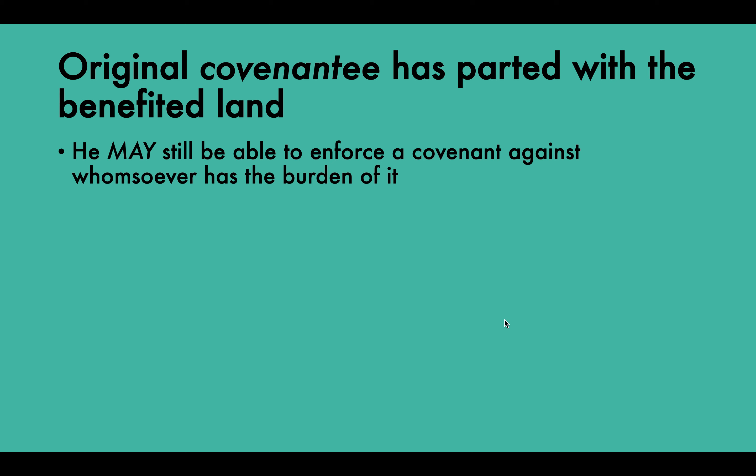The next situation is after the original covenantee has parted with the benefited land. If the covenantee has parted, he may still be able to enforce a covenant against whoever has the burden of it. However, in most cases this is not very successful because, if the court were to award anything, the damages would be nominal as they wouldn't really face a loss — they're no longer in possession of the benefited land. In equity, the court is likely to use its discretion to refuse to give any equitable remedy.